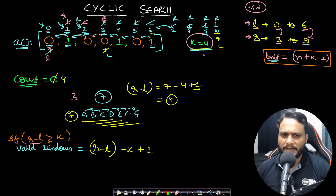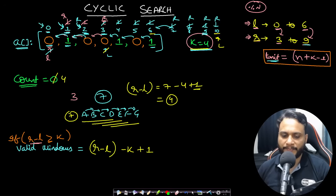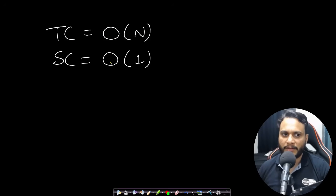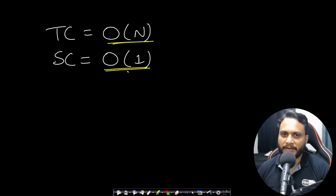This is the entire approach — a variable-size sliding window using the two pointer technique. The time complexity is O(n) because we traverse the array at most twice, and the space complexity is O(1).